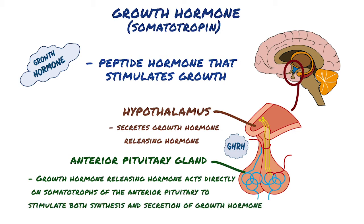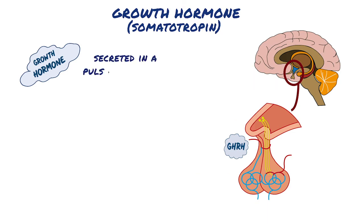The growth hormone is secreted in a pulsatile pattern, increasing and decreasing. The precise mechanisms that control secretion of growth hormone are not fully understood, but several factors related to a person's state of nutrition or stress are known to stimulate secretion.